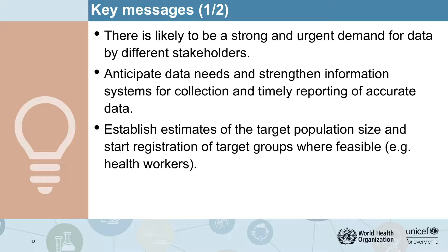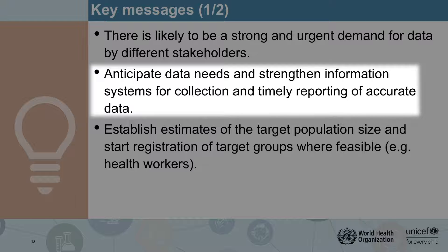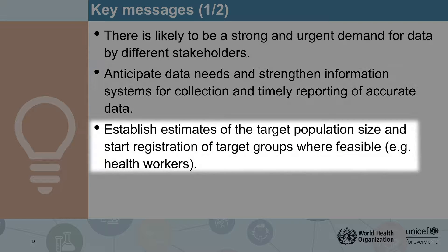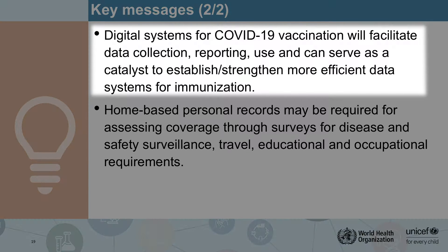The first key takeaway is that you should anticipate a strong and urgent demand for data by different stakeholders as soon as COVID-19 vaccination gets underway. You need to anticipate those data needs and strengthen data systems for collection and timely reporting. One of the best things you can start doing even ahead of vaccination is to establish estimates of the target population size and start registration of target groups where feasible — for example, make listings of health workers for each district. Also think about digital systems in your country and how they might facilitate COVID-19 vaccine introduction, including electronic immunization registries, health management information systems, supply chain management systems, or facility and health worker registers.